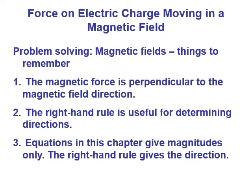Three things to remember while working on problems about magnetic fields: first, the magnetic force is always going to be perpendicular to the magnetic field direction — always perpendicular. Second, you use the right-hand rule to find the directions of things. Third, the equations in this chapter only give magnitudes, and you use the right-hand rule to get the direction. The right-hand rule can be sort of weird until you get used to it, but as you do the homeworks and daily problems, you'll get used to it and it'll get pretty easy.